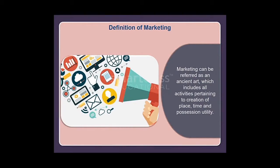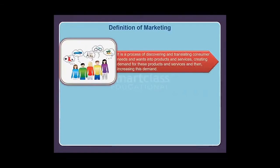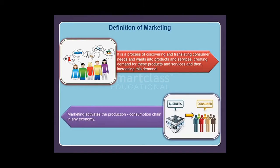of place, time, and possession utility. It is a process of discovering and translating consumer needs and wants into products and services, creating demand for these products and services, and then increasing this demand. Marketing activates the production-consumption chain in any economy.